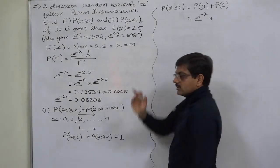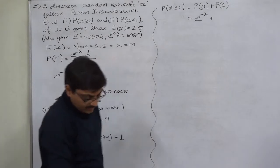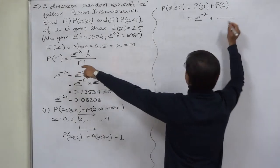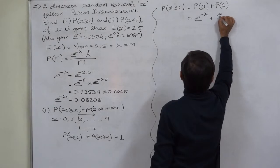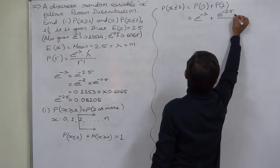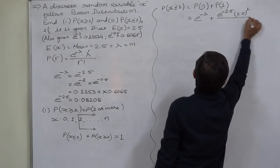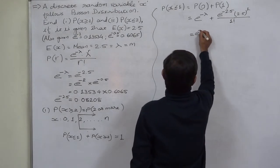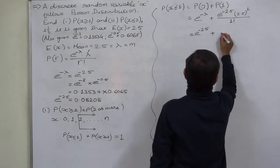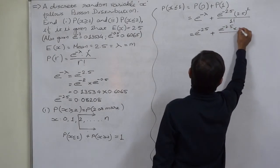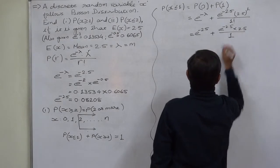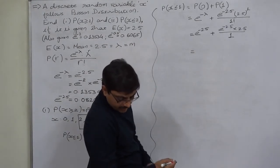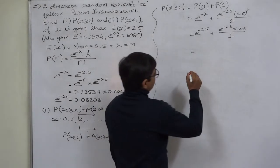In a Poisson distribution, the probability of 0 successes is always e^(−mean). The probability of 1 success, substituting in the formula, is e^(−2.5) × 2.5^1 / 1!. So we have e^(−2.5) + e^(−2.5) × 2.5 / 1.